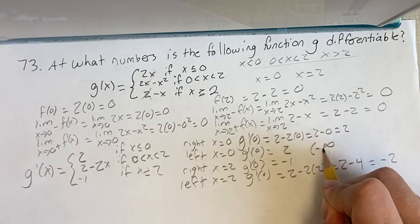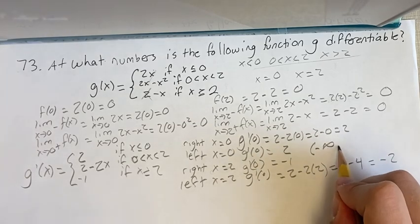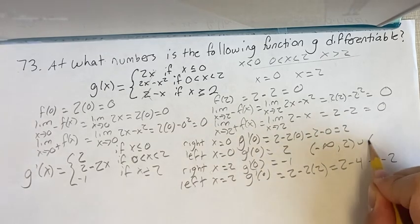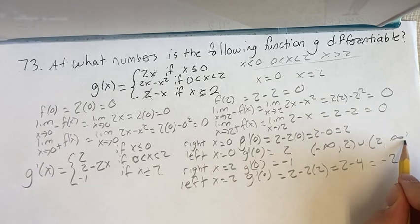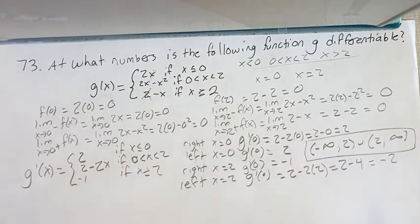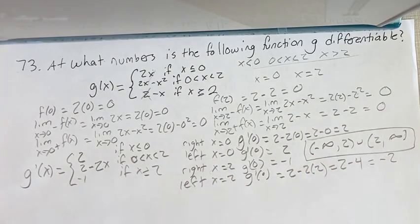Not differentiable at x equals 2. Differentiable on all real numbers other than that. So it is differentiable from negative infinity to 2, union 2 to infinity. That is your final answer. As always, thank you for liking and subscribing, and I will see you in the next video.